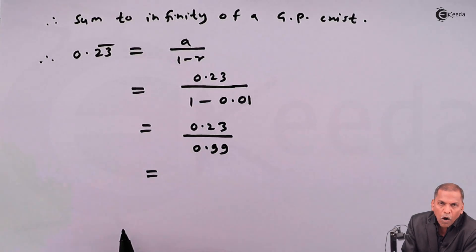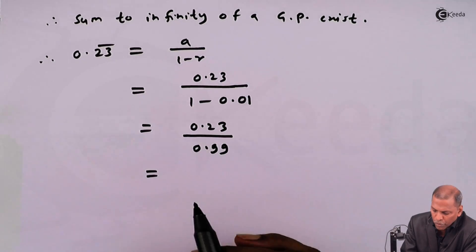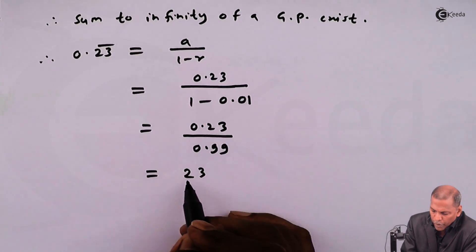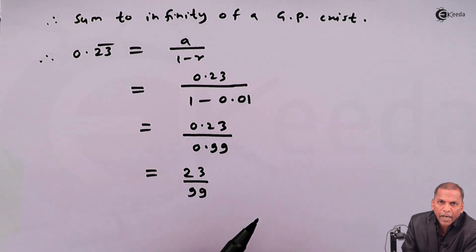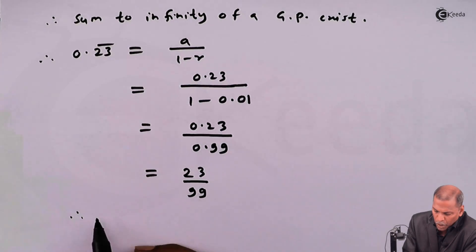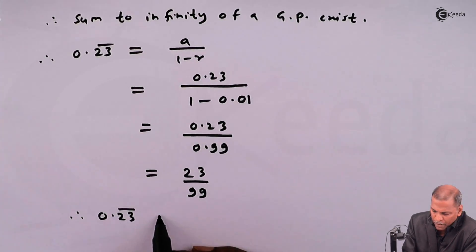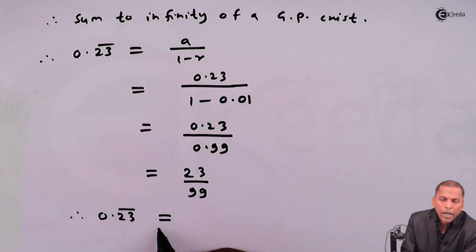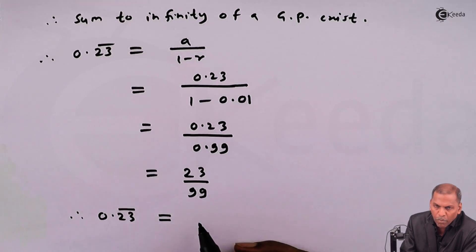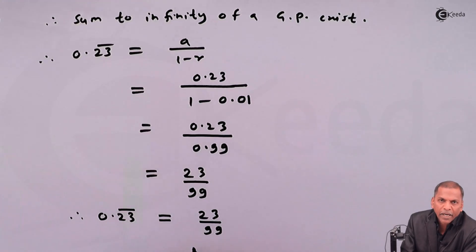On further simplification, we have 23 upon 99. It means 0.23 bar can be expressed as the rational number 23 upon 99.